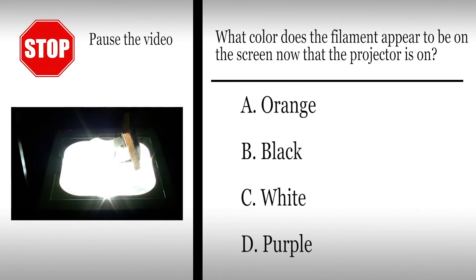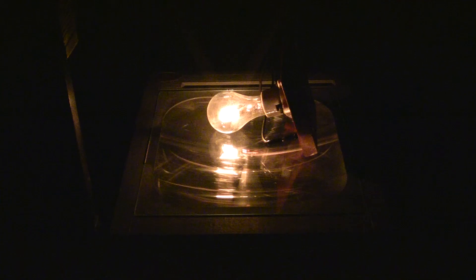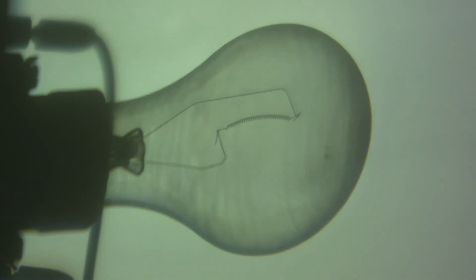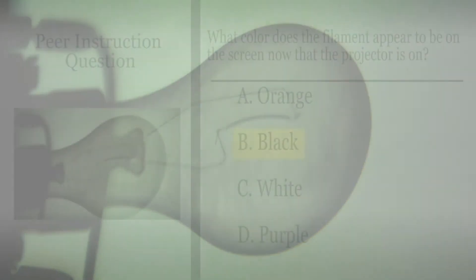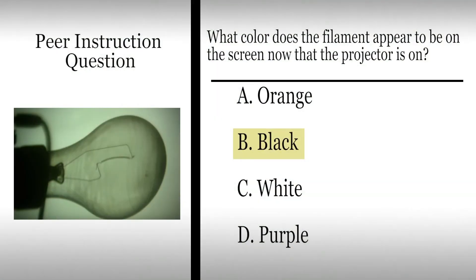Let's repeat this sequence. Note that I haven't made any changes to the power the light bulb is receiving. The filament is still orange. And when I turn on the projector, the filament is still orange, but it appears dark in contrast to the brighter surrounding surface of the overhead.